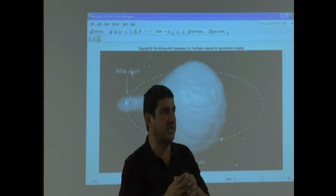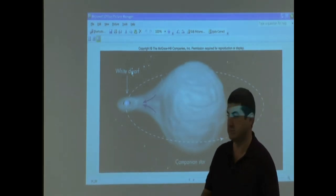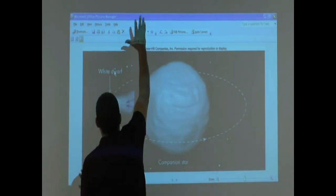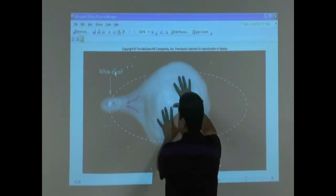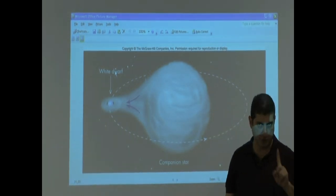When the mass of the white dwarf exceeds a certain value, the white dwarf explodes. When the white dwarf explodes, this star explodes with it. The whole thing explodes. This is Type 1 supernova.